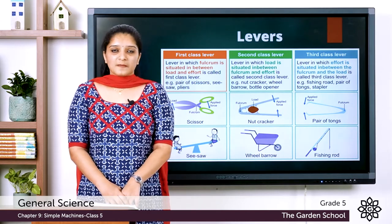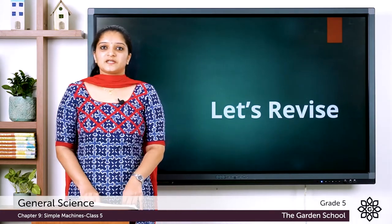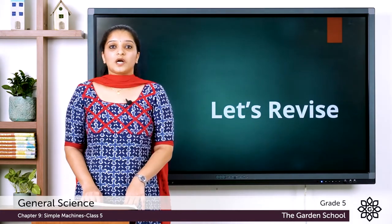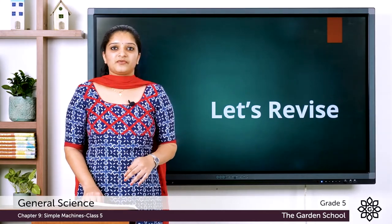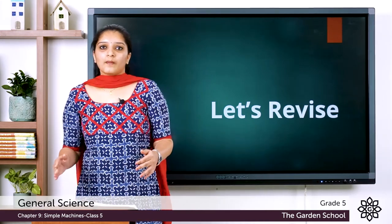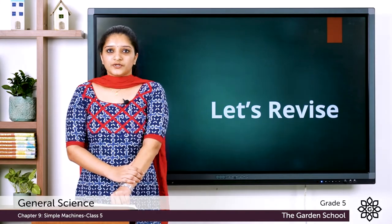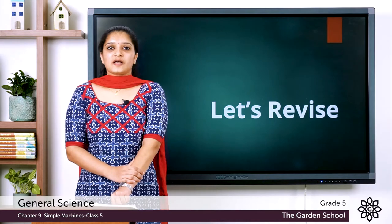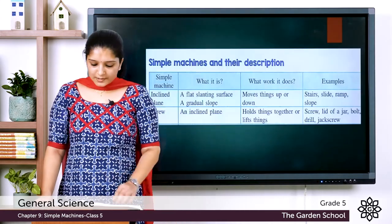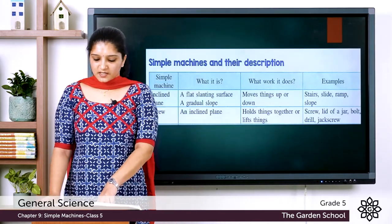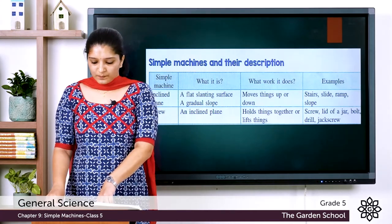That was all about the different types of levers, and this marks an end to this chapter. Now let's have a quick revision. In this chapter on Simple Machines, we learned that machines are any device that can be used to make our work easier. We classified them into simple machines and complex machines. Simple machines are again classified into six types. Students, please take page number 121 — there is a comparative study for the six types of simple machines.